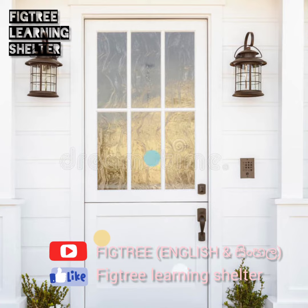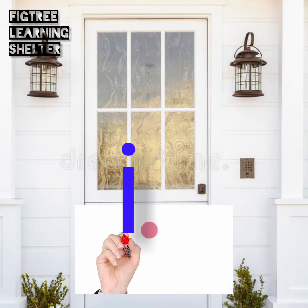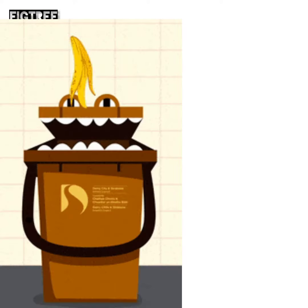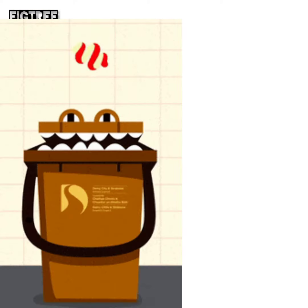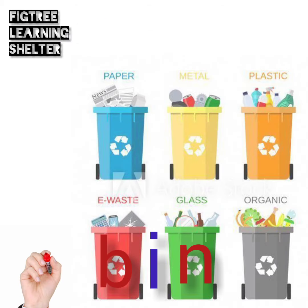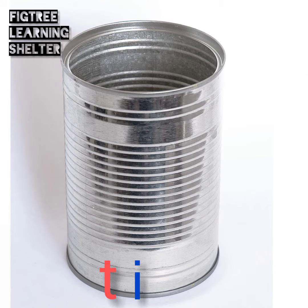Let's read three-letter words with the I sound. B I N — Bin. T I N — Tin.